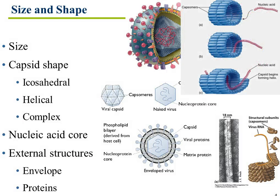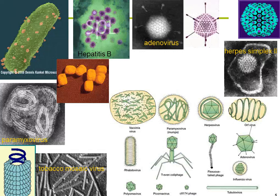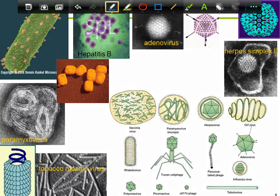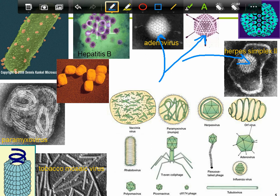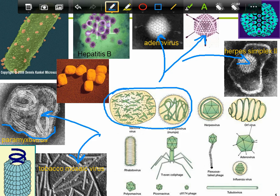A lot of viruses do not have envelopes, by the way. Some different shapes of viruses: here is icosahedral, icosahedral, icosahedral. And the herpes over here, the last one, has an envelope around it. Some helical viruses — helical, here's another helical right there. Look at the structures inside — there's an envelope around it. Complex shapes — these two guys right there.